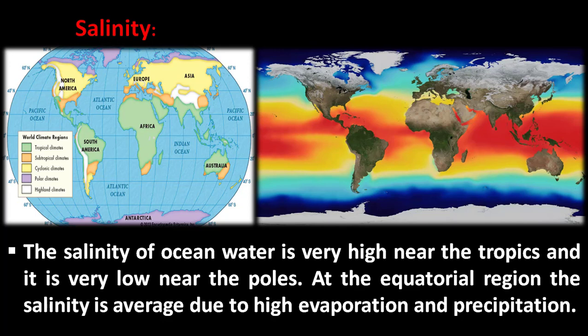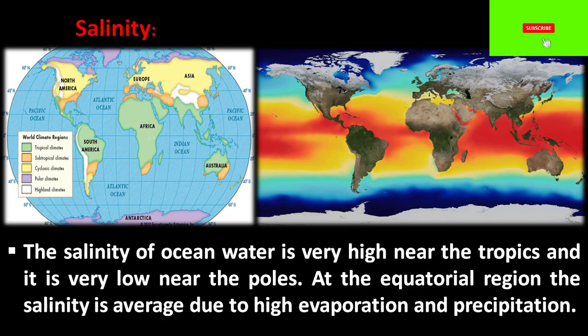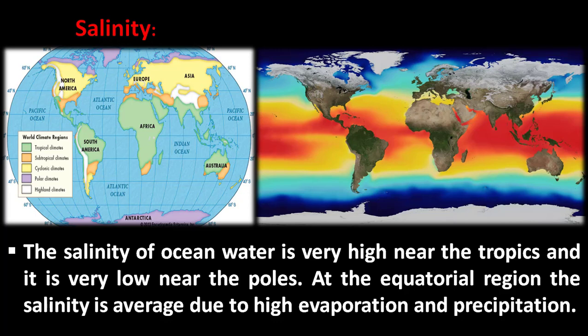Some salinity facts: Lake Van, located in Turkey, has 330 ppt. The Dead Sea, located in Asia, contains 300 ppt. Lake Sambar, located in India, has a salinity of 265 ppt. The Red Sea, between Asia and Africa, has 240 ppt.